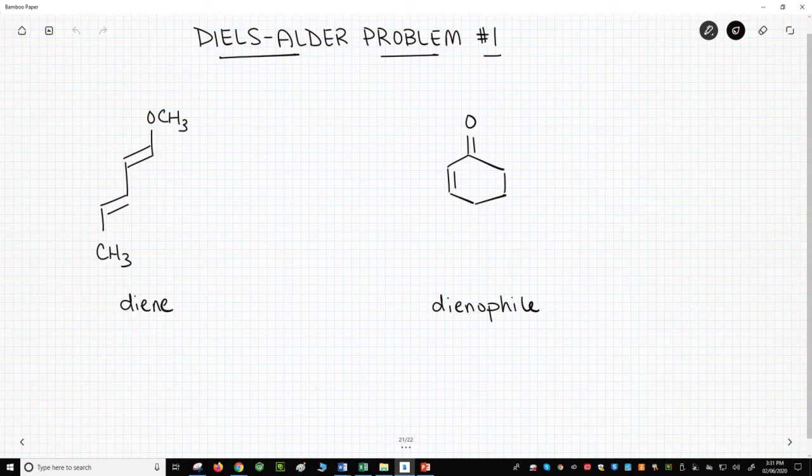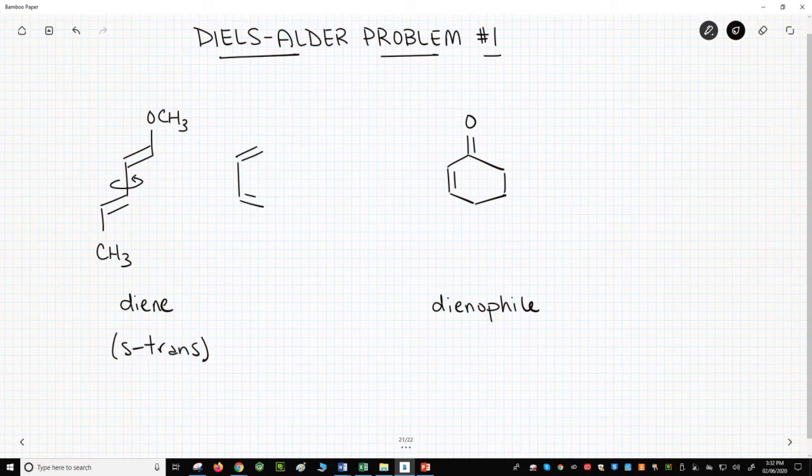The first thing to notice is that our diene is not drawn in the S-cis conformation. This is S-trans. We need to make sure this diene can adopt an S-cis conformation. It can by rotation about this C-C single bond. Here is the S-cis conformation.